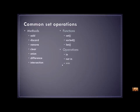Once you have your set, there are several set operations that you can use to manipulate your data. Remember what a method looks like — you've got your dot notation. So we have add, discard and remove, which is similar to pop and remove that we had for list. And we have clear. And then here are some specific set methods such as union, difference and intersection.